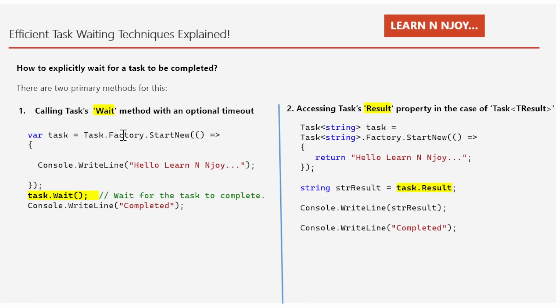Inside the lambda expression I have written the code for the task to execute — a Console.WriteLine statement printing 'Hello Learn Enjoy' to the console window. Next, I have written Task.Wait — this line waits for the task to complete. This is necessary because without waiting, the program would finish execution before the asynchronous task completes. Then Console.WriteLine('Completed') will be printed almost immediately after 'Hello Learn Enjoy'. That's how we use the Task.Wait method.